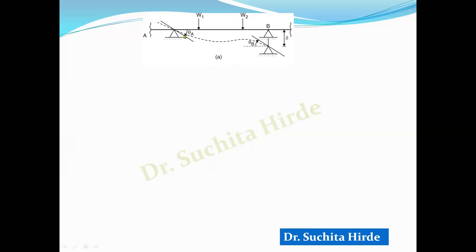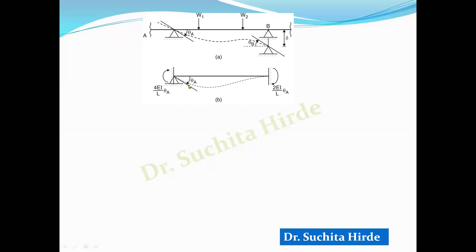Now first we will see what is the effect of theta A on the final end moment. If there is a rotation of any end — suppose this is theta A — then we know the stiffness of the beam. Flexural stiffness means the moment required for unit rotation. When slope is equal to 1, the moment required is 4EI/L. So to rotate this end by theta A, we require a moment of 4EI/L × theta A.